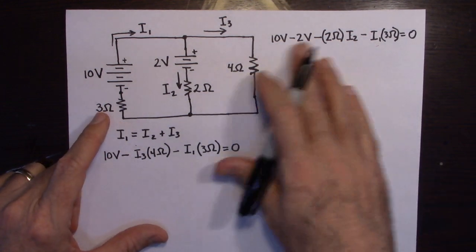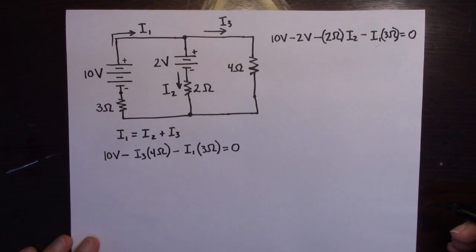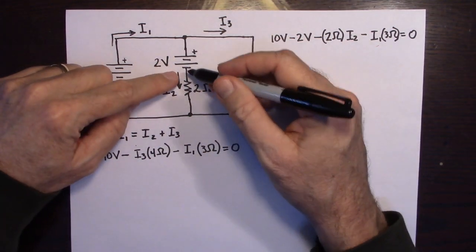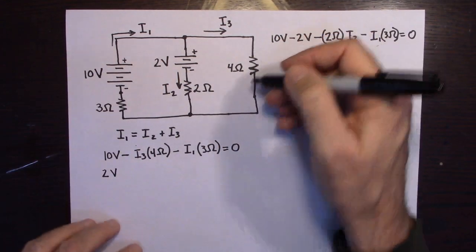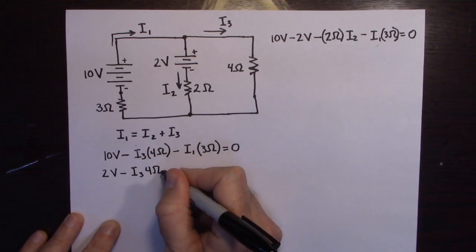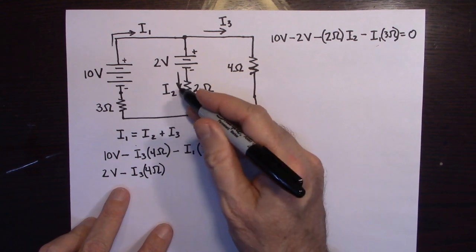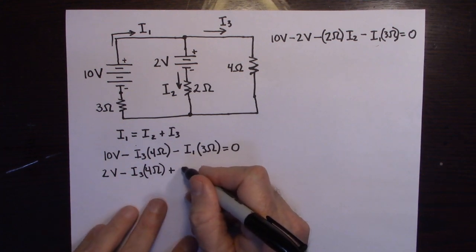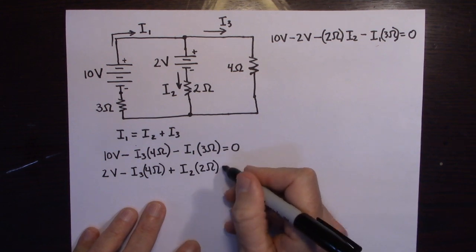I wanted to show that loop to get another equation. Now I'll use this third loop rule instead: gain 2 volts, then going with the current through the 4 ohm resistor is minus I3 times 4, then going against the current through the 2 ohm resistor is a gain of I2 times 2. That all equals zero.